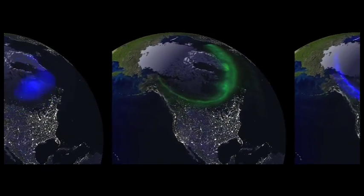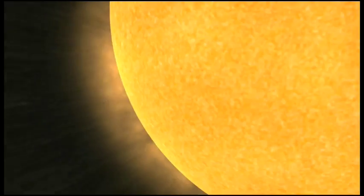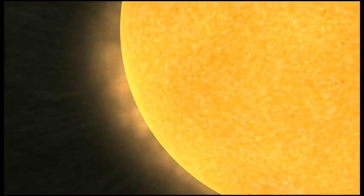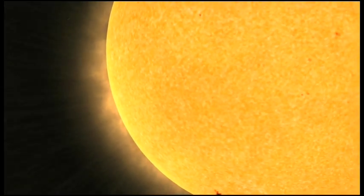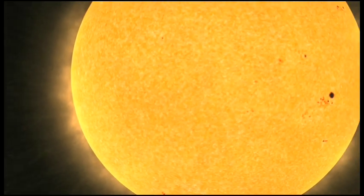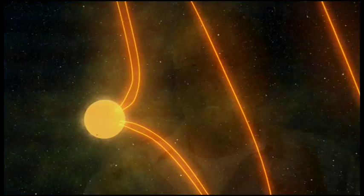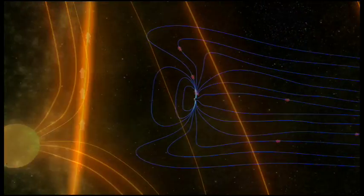Space weather is the environmental conditions outside of our planet, originating from the massively energetic output of the Sun. The solar wind is primarily comprised of protons and electrons. They're streaming outward from the Sun at speeds of up to a million miles an hour, and they are constantly bombarding the Earth's magnetic field.